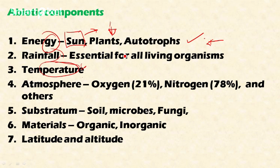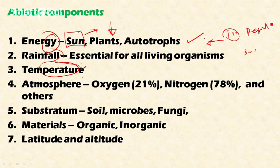The second abiotic factor is rainfall. Rainfall in association with temperature greatly influences almost all ecosystems on the planet. For example, if there is more rainfall and an optimum temperature of around 30 degrees, we find terrestrial ecosystems like tropical evergreen forests. If rainfall is very less and temperature is very high, we find desert ecosystems.